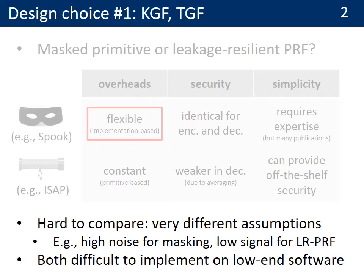In terms of simplicity, masking is admittedly non-trivial to implement securely, but benefits from many related publications, while a leakage-resilient NPRF can offer off-the-shelf security. It is mostly the possibility to avoid overheads when side-channel attacks are not a concern that guided our choice. Masking and leakage-resilient NPRFs are difficult to compare from the security viewpoint, since they rely on very different assumptions: high enough noise for masking and low enough signal for the PRF. Both are also quite challenging to implement securely on low-end software.